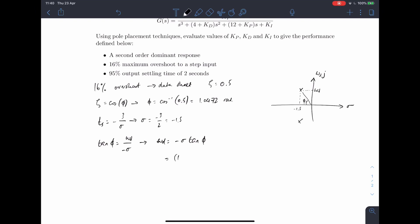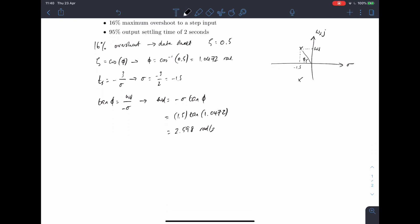So that's going to be 1.5 times by the tangent of 1.0472. And that gives us an omega value of 2.598 radians per second.